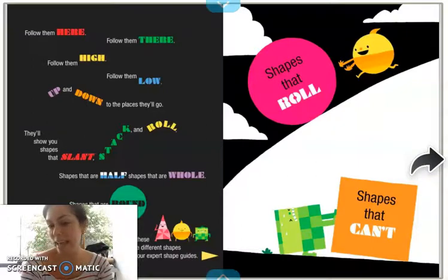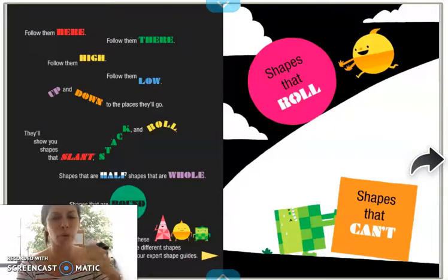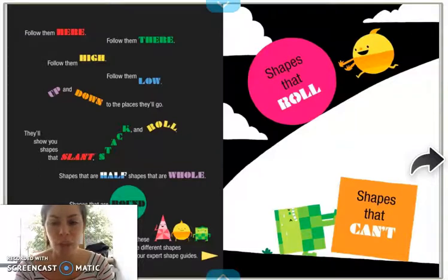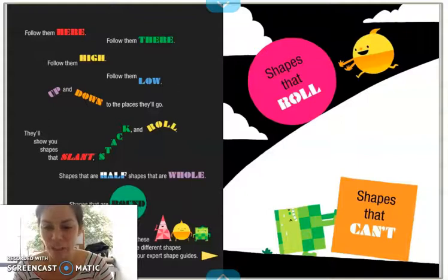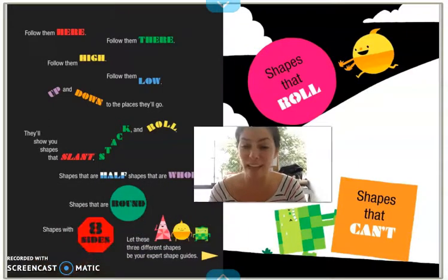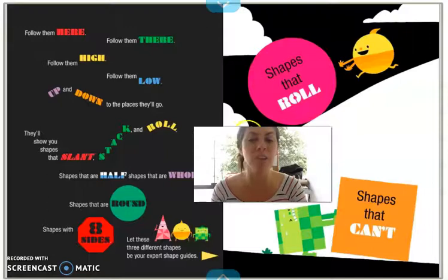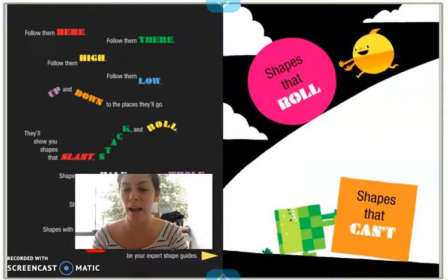They'll show you shapes that slant, stack, and roll. Shapes that are half, shapes that are whole. Shapes that are round. Let these shapes, and shapes with eight sides, let these three different shapes be your expert shape guides.